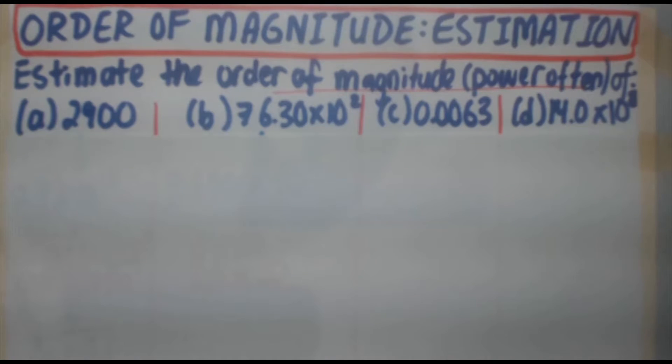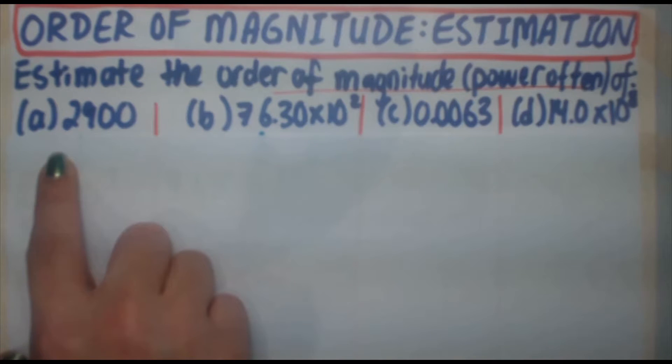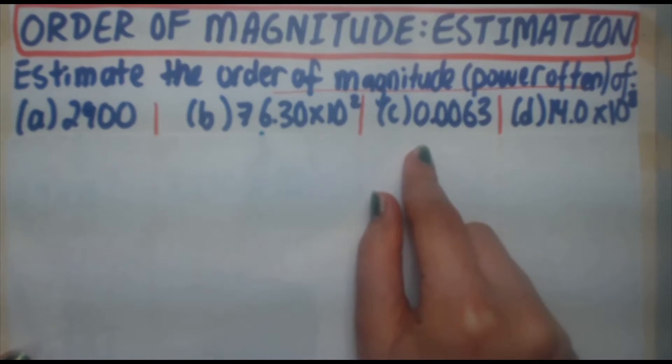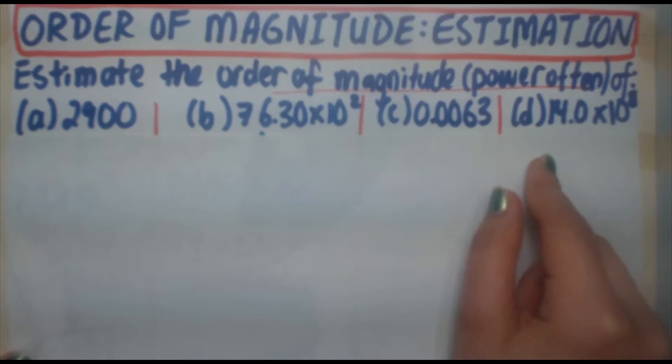Estimate the order of magnitude, also known as power of 10, of: (a) 2,900, (b) 76.30 times 10 to the 2, (c) 0.0065, and (d) 14.0 times 10 to the 8.